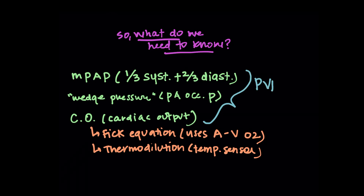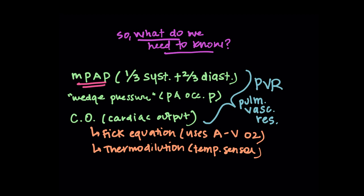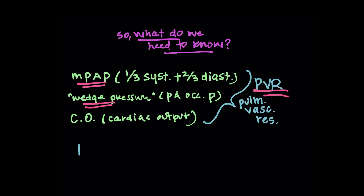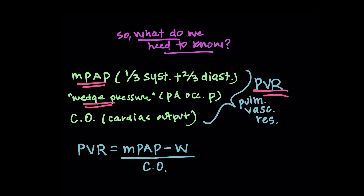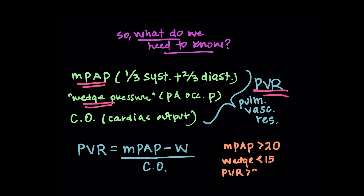These three numbers are important because you want to calculate your PVR, your pulmonary vascular resistance — the three numbers you need to diagnose pulmonary arterial hypertension are your pulmonary artery pressure, your wedge, and your PVR. PVR is calculated as the mean pulmonary artery pressure minus the wedge (pulmonary arterial occlusion pressure), divided by the cardiac output. To diagnose pulmonary arterial hypertension, you want a mean PA pressure greater than 20, a wedge less than 15, and a PVR greater than 3.